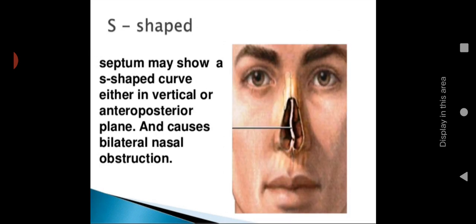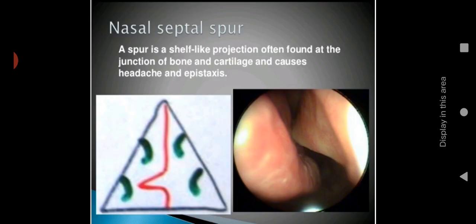S-shaped: the septum may show an S-shaped curve either in the vertical or anterior-posterior plane. Vertically straight or anterior-posterior S-shape deviation can be seen. It causes bilateral nasal congestion because the S-shape involves both sides.